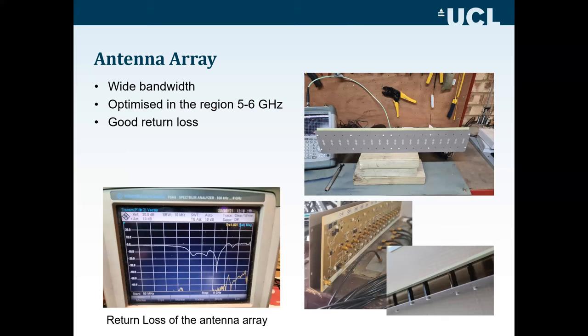Here's the antenna built and tested. You can see the spacing between the two boards, all the coaxial lines and SMA IF outputs. The S11 measurements show it's quite wideband — the return loss performs from 4 to 6 GHz, but is optimized more in the 4.8–5 GHz region, which is the main Wi-Fi frequency band.